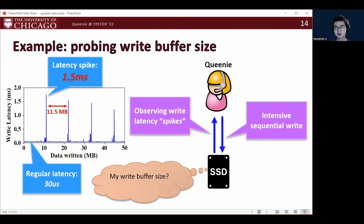By analyzing the latency distribution, QINI discovers that the interval between two neighboring latency spikes is consistently 11.5 megabytes. So QINI concludes that this SSD performs a buffer flush activity for every 11.5 megabytes of write data. In other words, this SSD has a write buffer size of 11.5 megabytes.